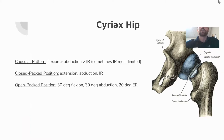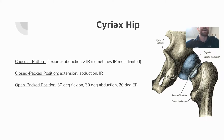General rules for the hip: the capsular pattern is loss of flexion greater than loss of abduction, greater than loss of internal rotation — or internal rotation may be the most limited, which is most typical clinically. A significant loss of motion in most directions indicates a capsular restriction. The closed-packed position is extension, abduction, and internal rotation — used in SI manipulation to lock out the hip and transfer force to the SI joint. The open-packed position is 30 degrees of flexion, 30 degrees of abduction, and 20 degrees of external rotation — used when manipulating the hip in supine.